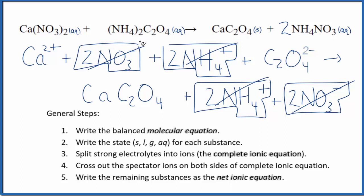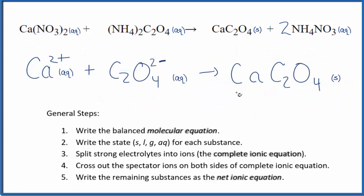I'll clean this up. Write the states. We'll have our net ionic equation. So this is the balanced net ionic equation for calcium nitrate and ammonium oxalate.